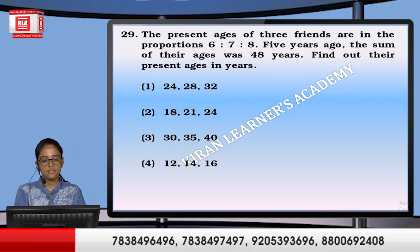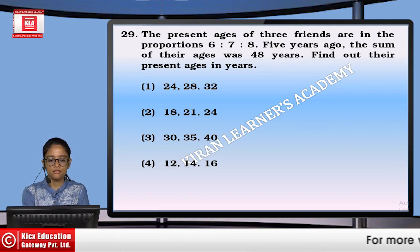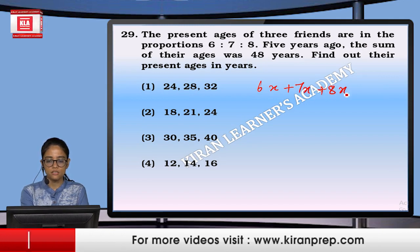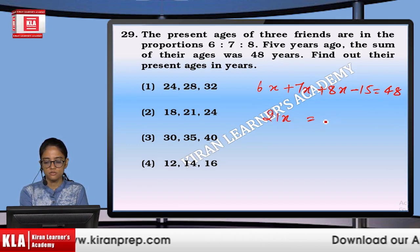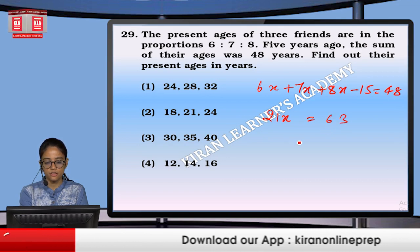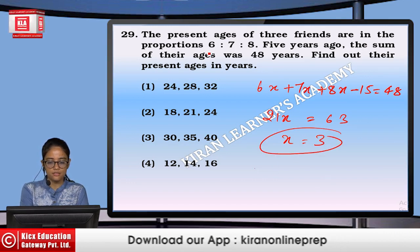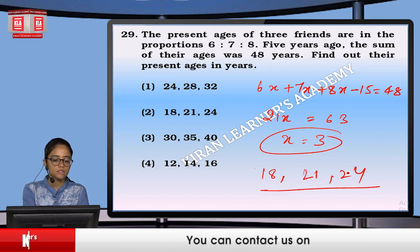The present ages of three friends are in proportion 6:7:8. Five years ago, the sum of their ages was 48. So 6X + 7X + 8X minus 15 equals 48, giving 21X = 63, so X = 3. The present ages are 18, 21, and 24. Option number 2.